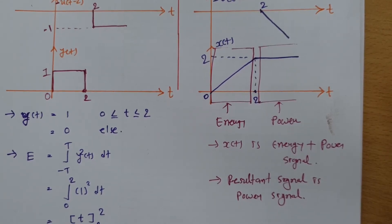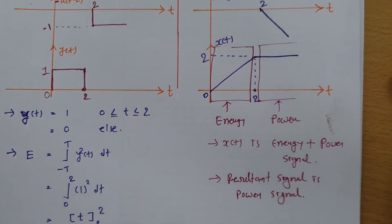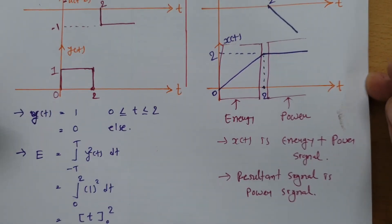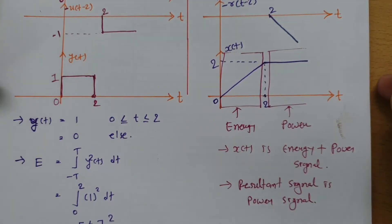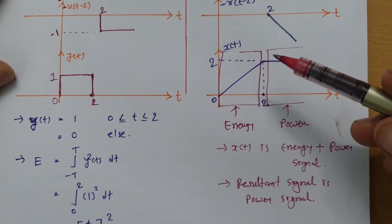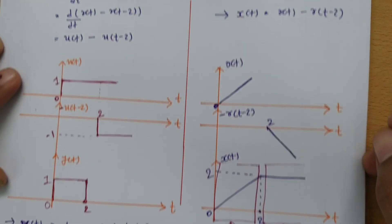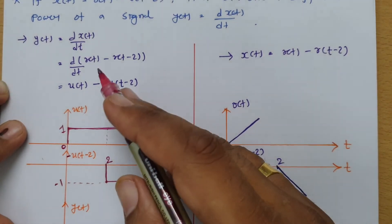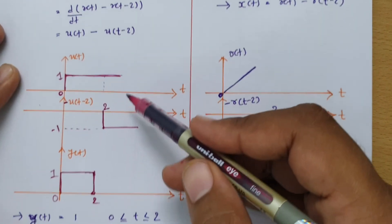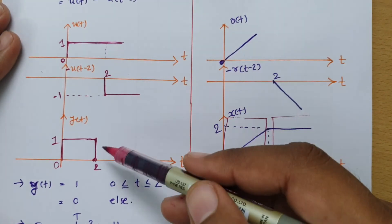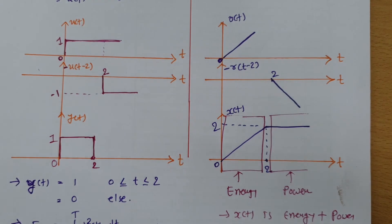Here are the key basics to remember. First, if a signal is a combination of energy plus power, it is classified as a power signal. Second, the differentiation of a ramp signal gives a step signal. These fundamentals will help you solve problems based on energy and power in gate examinations.